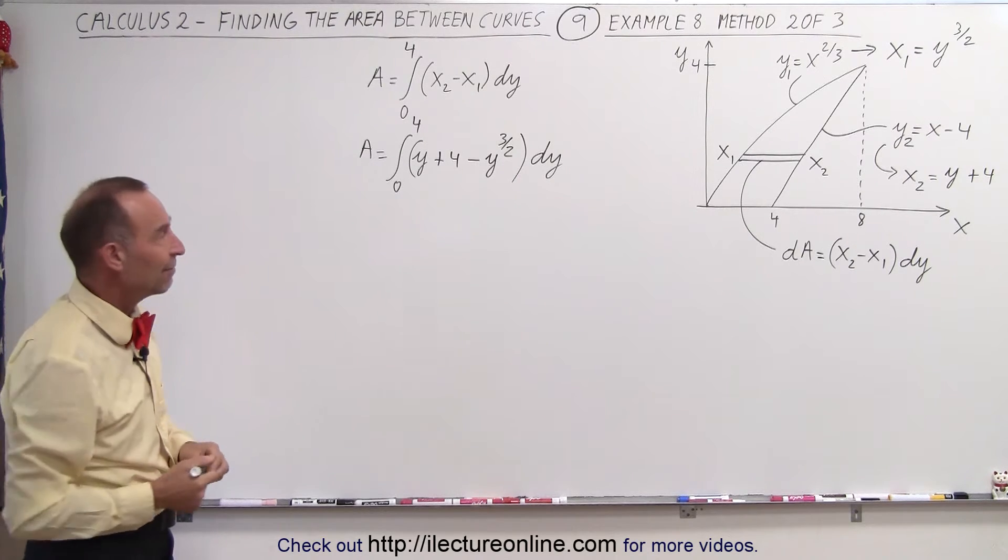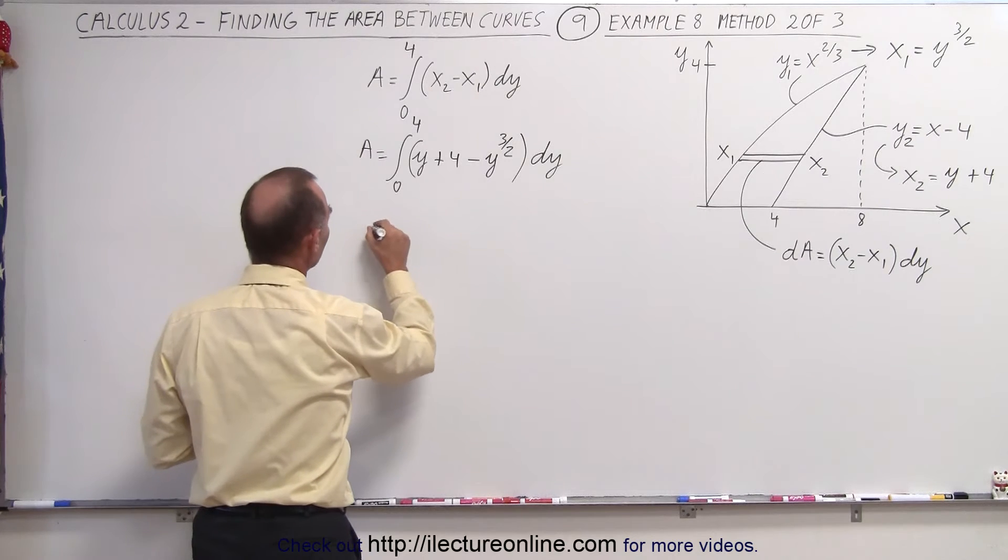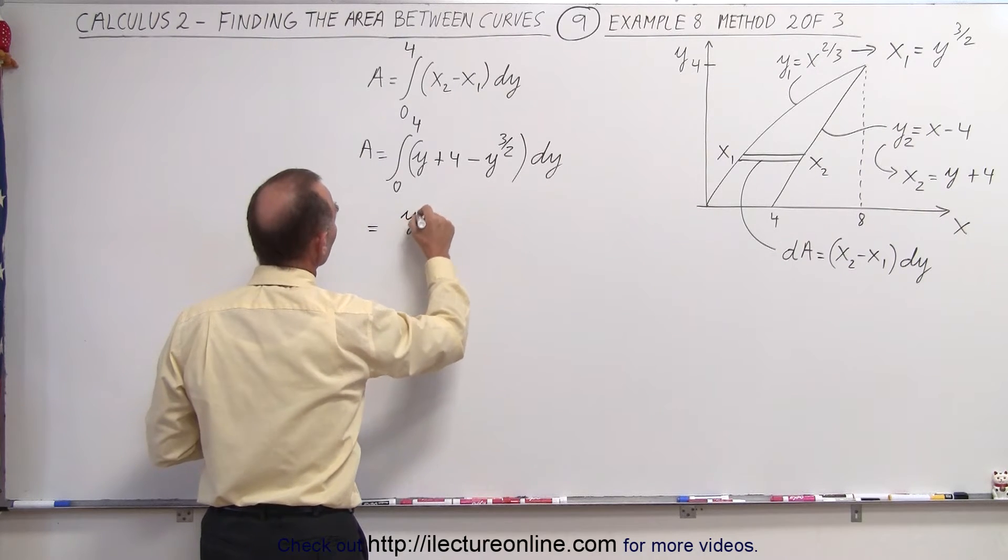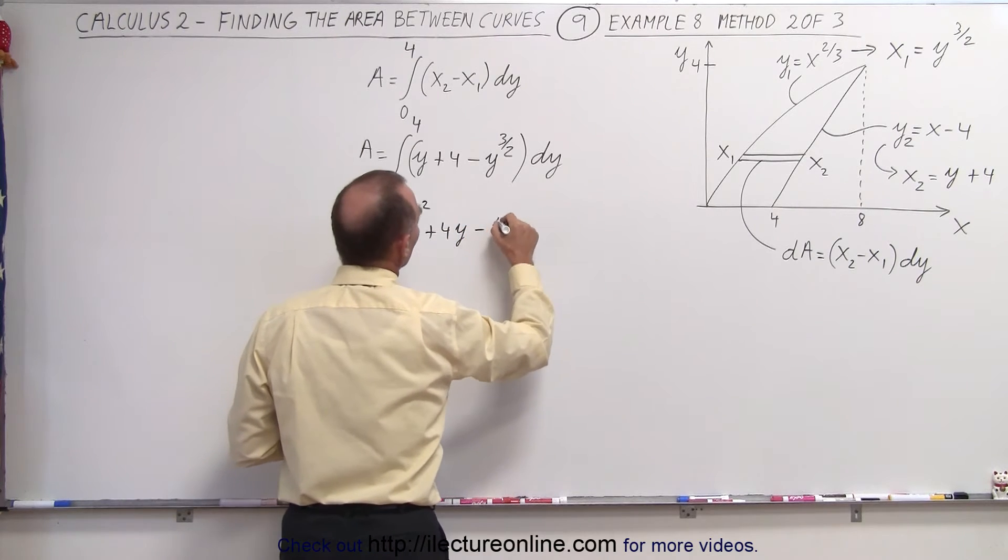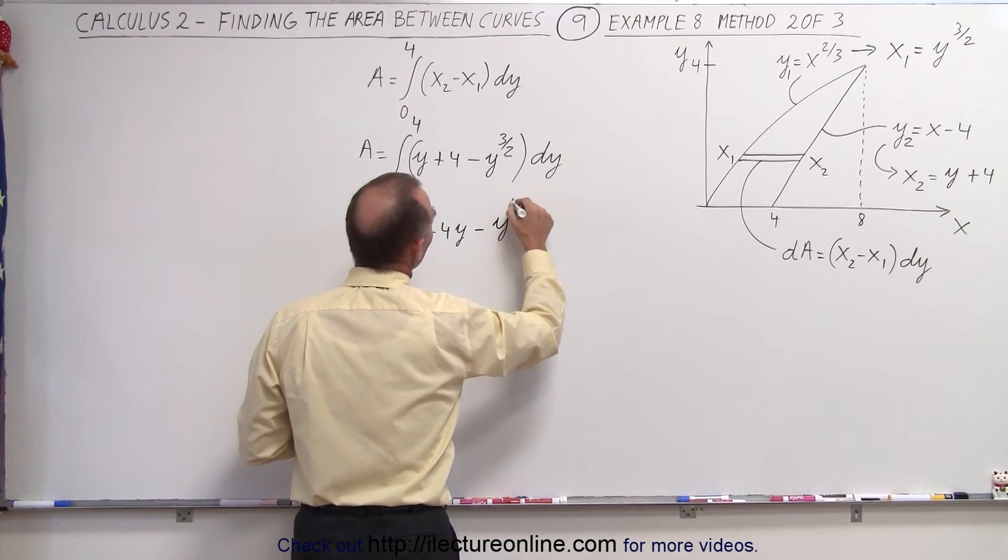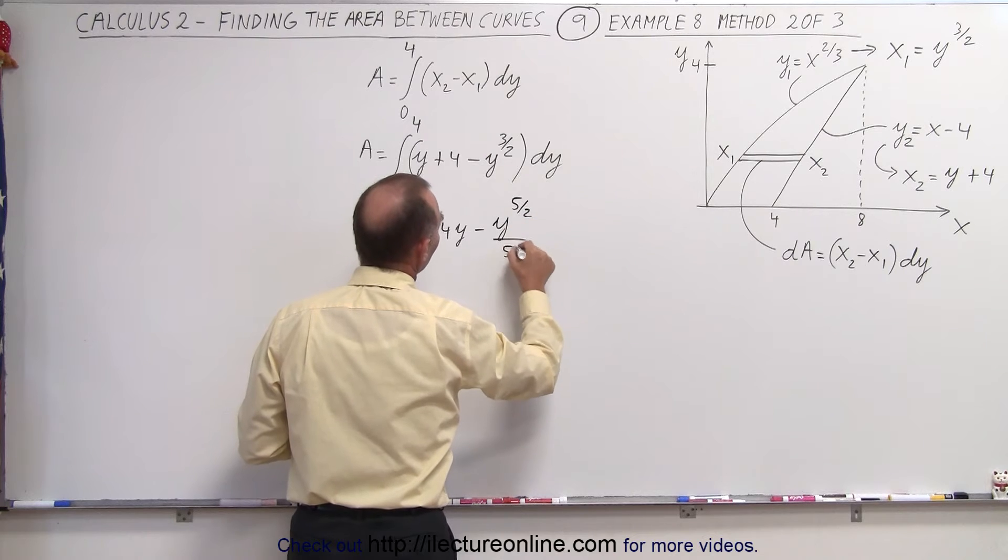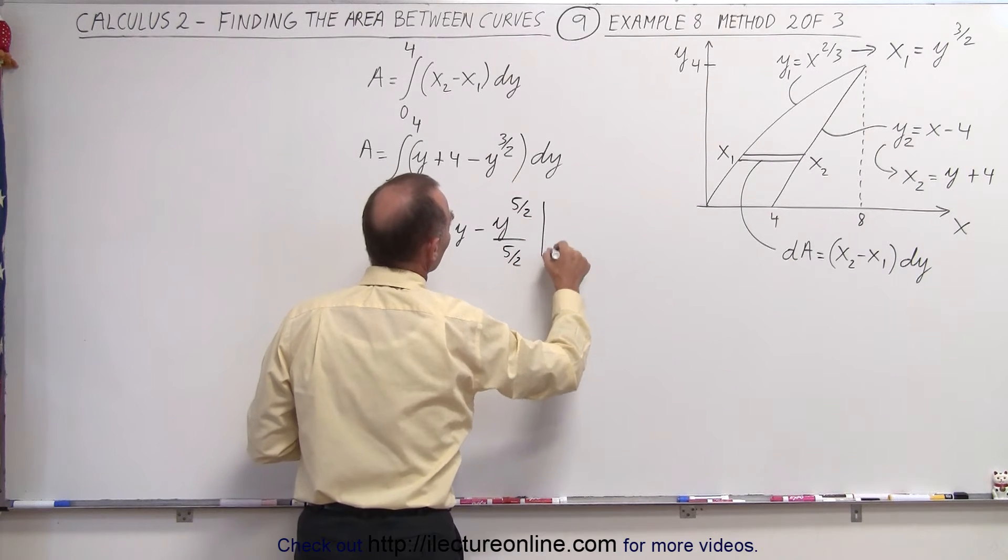Let's see if we get the same value. So this becomes equal to y squared over 2 plus 4y minus y to the 5 halves divided by 5 halves evaluated from 0 to 4.